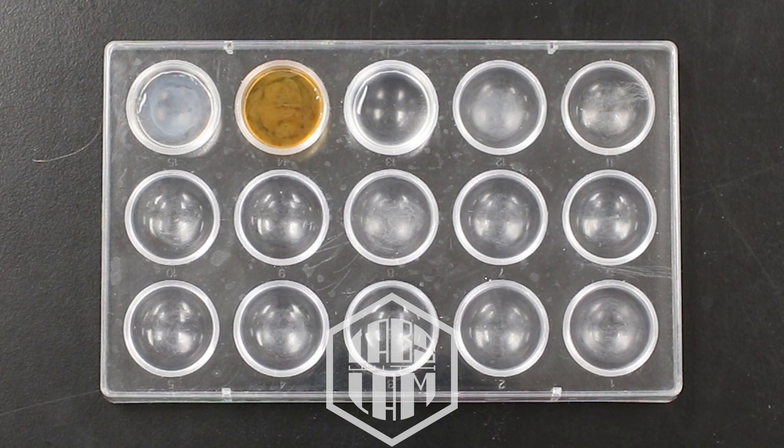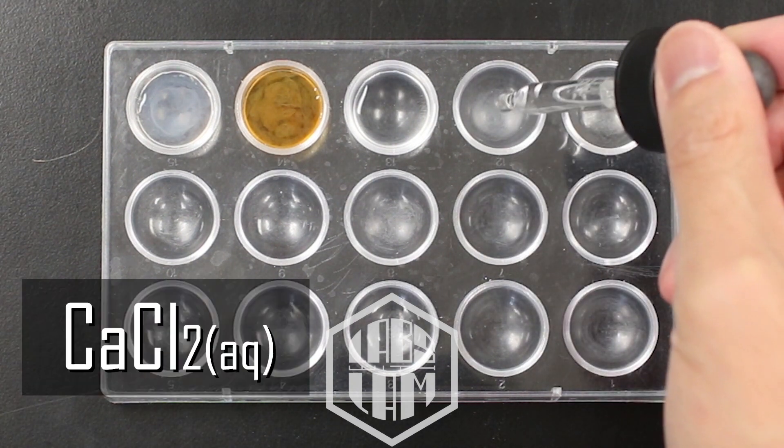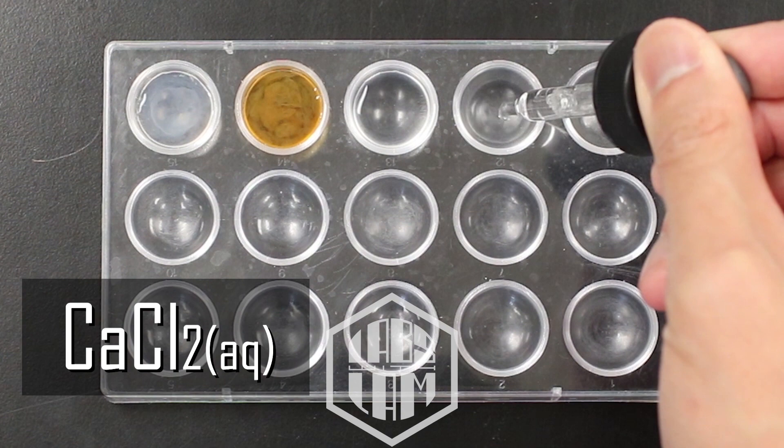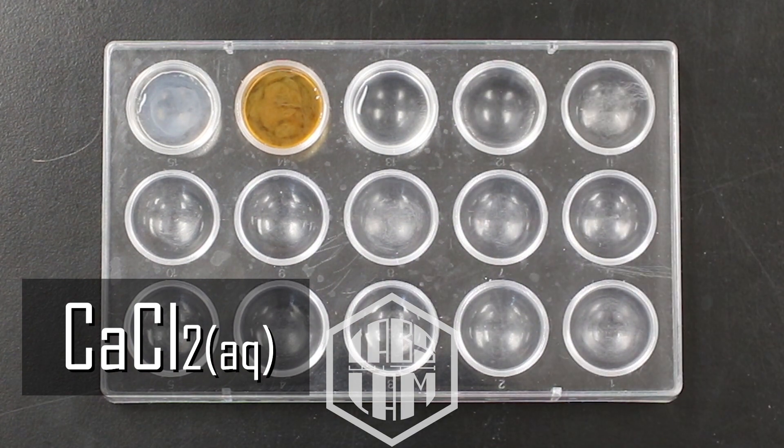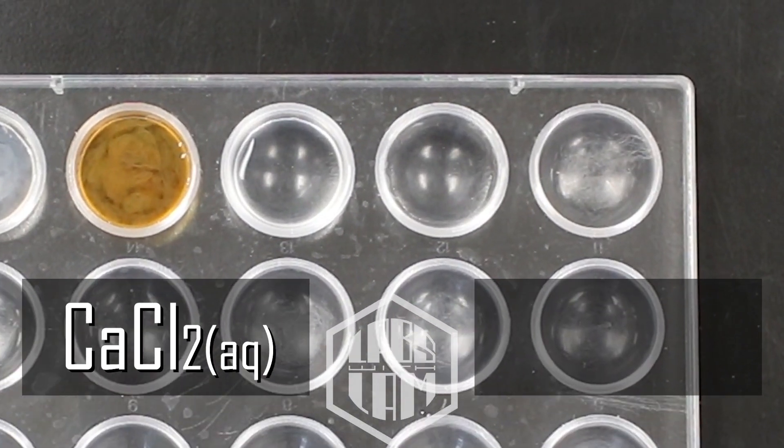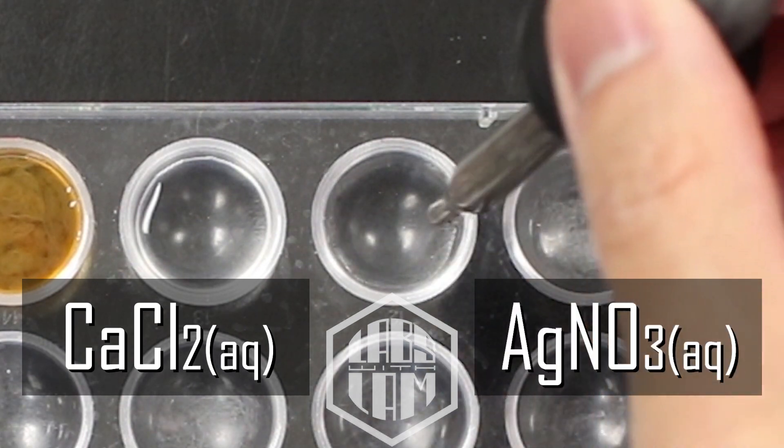All right, almost done here. This time we're starting with calcium chloride. And then we're adding some silver nitrate.